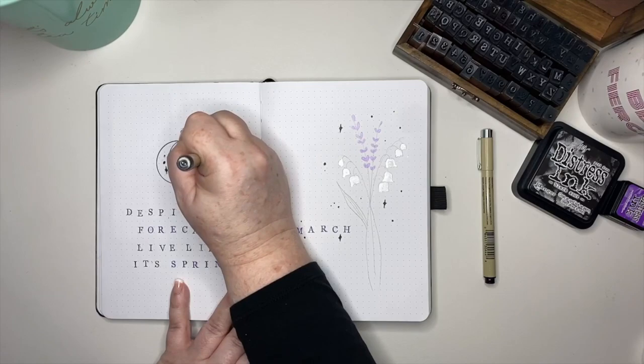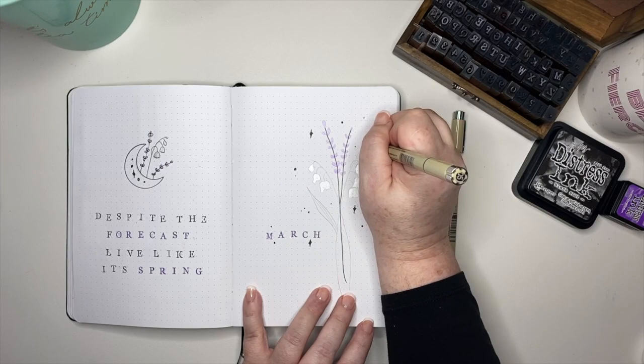For finishing off the flowers, I am tracing over my lines with Pigma Microns, switching back and forth between a 0.05 and a 0.01, depending on how large or small the doodle is on the page.